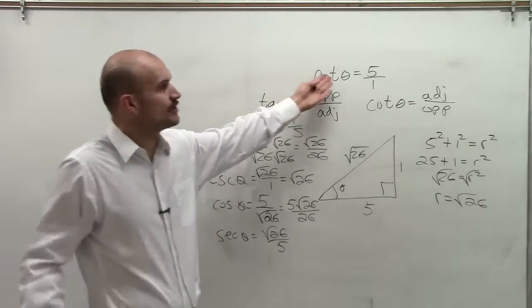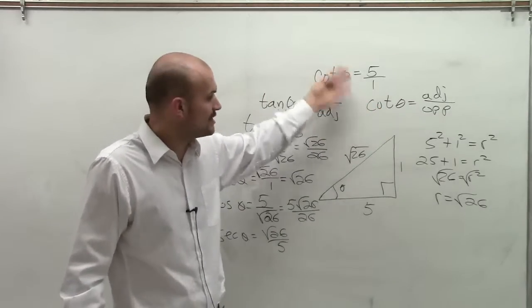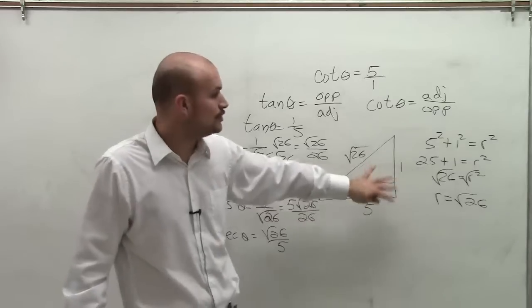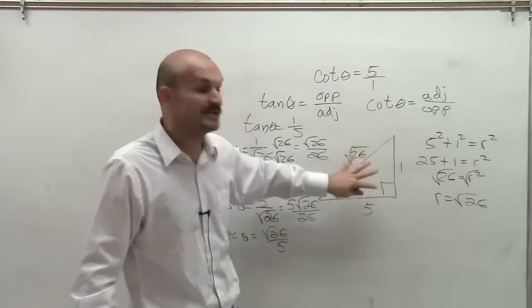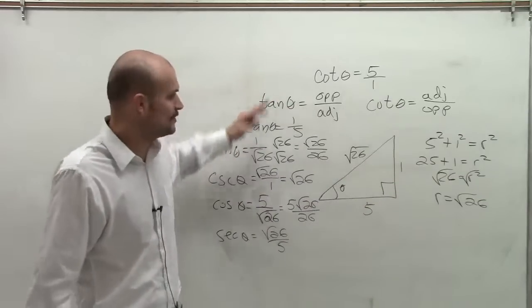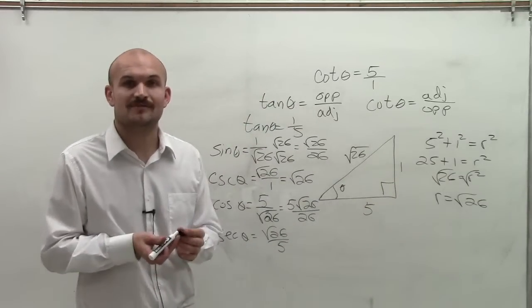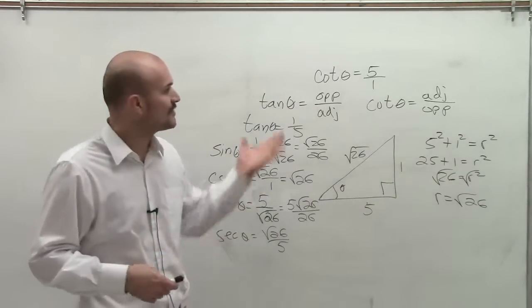So when given a trigonometric function, you want to make sure that you create your triangle, use the Pythagorean theorem to find your missing side of your triangle, and then you can reevaluate the rest of your trigonometric functions. So there you go, ladies and gentlemen. Hope you enjoyed. Thanks.